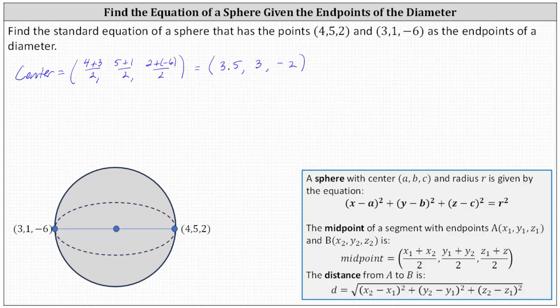Now we know for the equation of the sphere: a equals 3.5, b equals 3, and c equals negative 2.